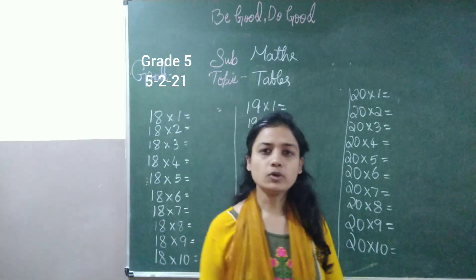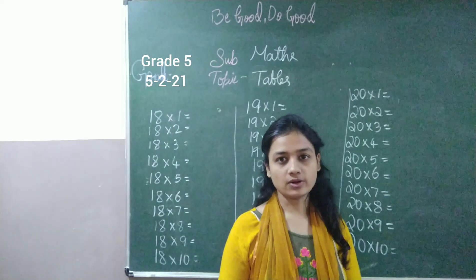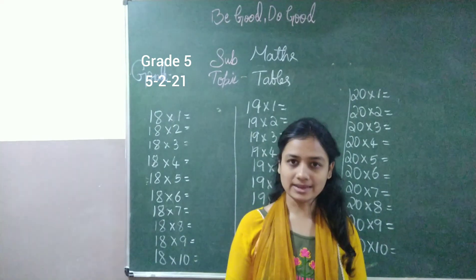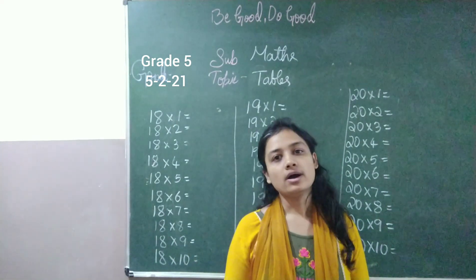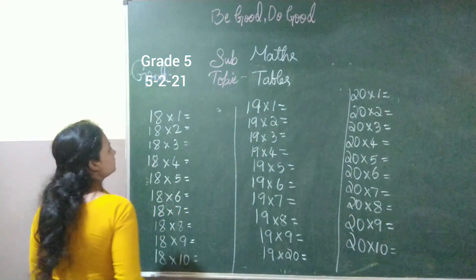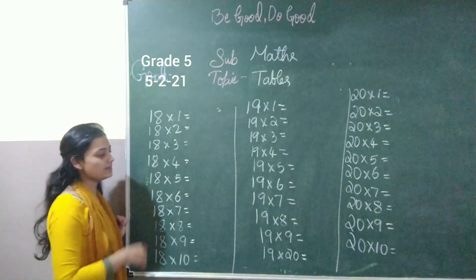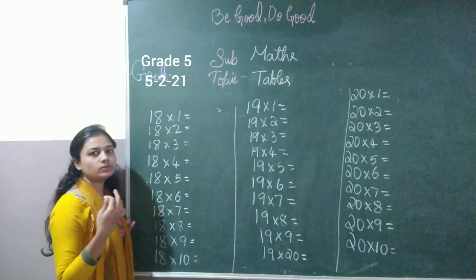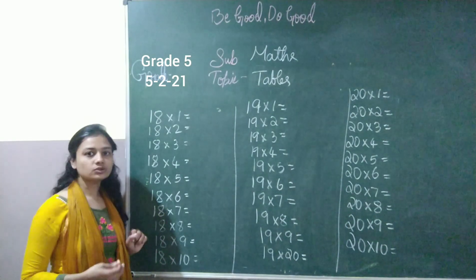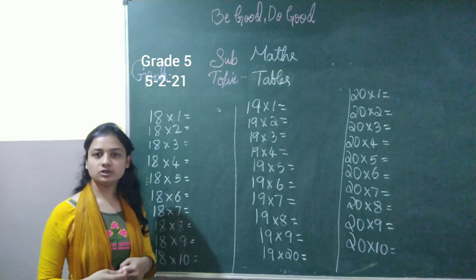But now I am going to give you one more easy method of writing tables 18, 19, 20 and also by reading them. So let's start the table from 18. So you all know skip counting numbers, right?